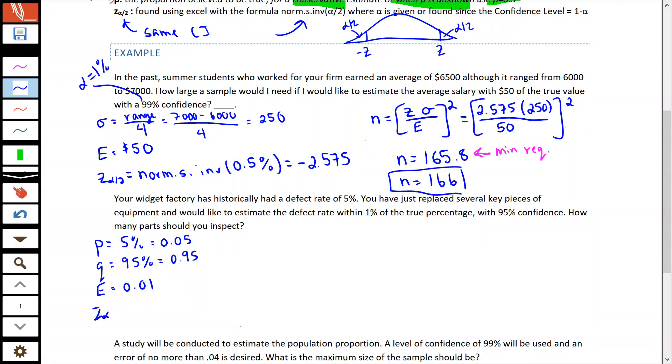We need to know our Z value as well. Because this is an alpha of 5%, when I go norm.s.inverse, I'm going to split and put 2.5% in there. I'm going to get back my value of negative 1.96.